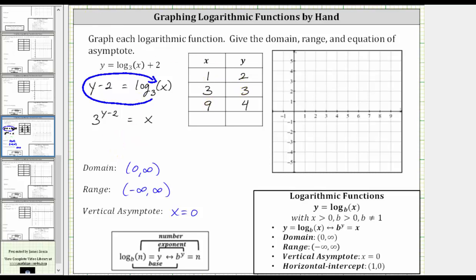Let's go ahead and find one more point. Let's let y equal one. If y is equal to one, then x is equal to three raised to the power of one minus two, which is negative one, and three to the negative one is equal to one third.